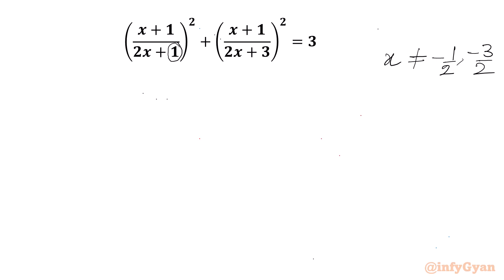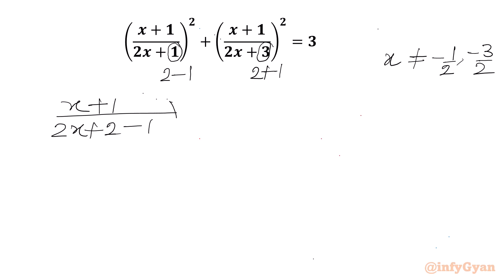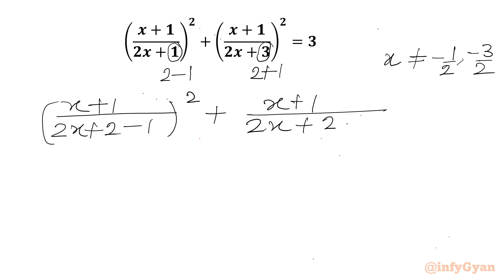Now we can rewrite 1 and 3 as (2−1) and (2+1). So we write the equation as (x+1)/(2x+2−1)² + (x+1)/(2x+2+1)² = 3.